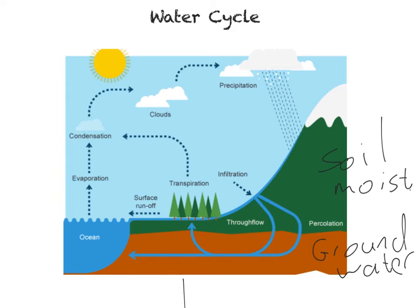So that's the overview of the water cycle. One of the other things you'll have to do in your exam is possibly demonstrate understanding of this process as a system — the idea that it has inputs, stores, transfers and outputs. Precipitation is the input into the water cycle and the output is the movement of water back into the sea, so the discharge of the river at the mouth.